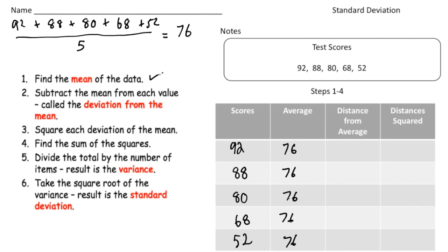Step number two: subtract the mean from each value. So I subtract 76 from each number — 92 minus 76 is 16, 88 minus 76 is 12, 80 minus 76 is 4, 68 minus 76 is negative 8, and 52 minus 76 is negative 24.